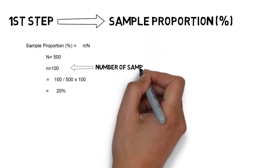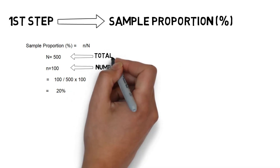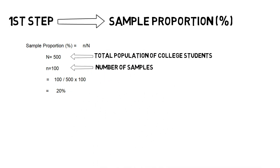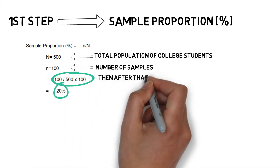If your number of samples is 100 respondents, and there are a total of 500 college students in the College of Business and Management, you just need to divide the samples by the total population. So 100 divided by 500, times 100, is 20%.